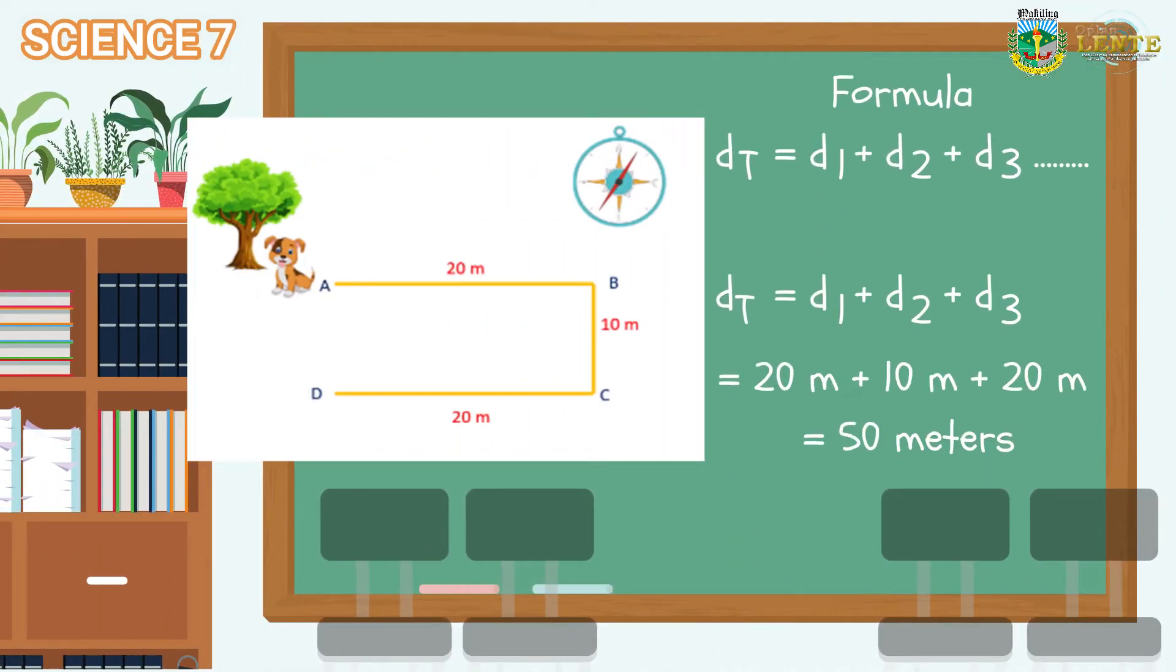We can get the total distance through this formula. d sub t is equal to d sub 1 plus d sub 2 plus d sub 3 and so on and so forth. So going back on our example, the total distance is the sum of the length traveled by the object which is the dog.